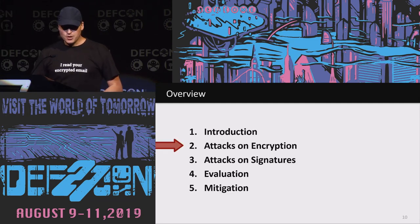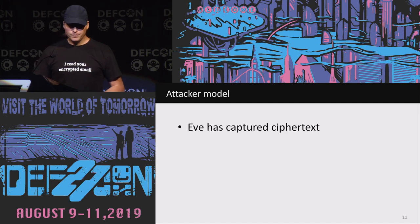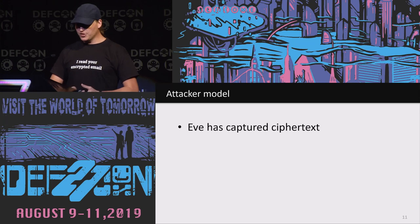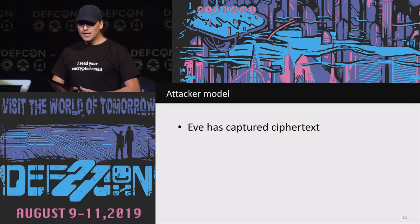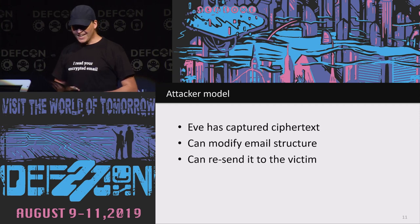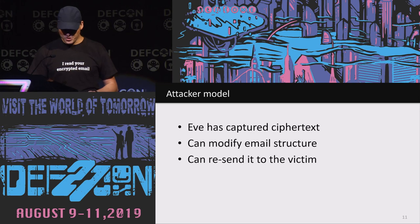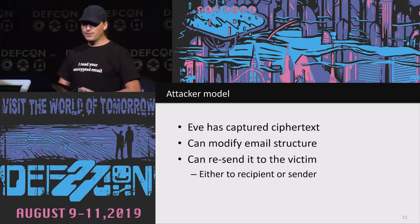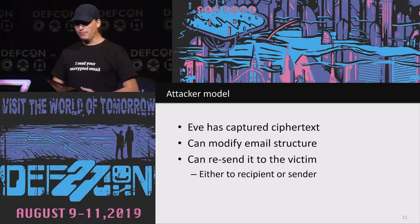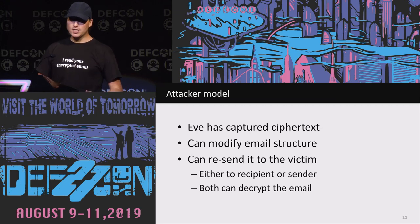Let me come to the attacks on encryption. Our attacker model is super simple: the eavesdropper Eve has somehow captured ciphertext between two communication parties. It's a strong attacker model, but the only reason you use end-to-end email encryption is that an insecure communication channel is presumed. What Eve can do with the captured ciphertext email is modify the outer MIME structure — no ciphertext modification or bit-flipping today. She can then resend that modified email to the victim, either the original sender or recipient, since emails are typically encrypted with the public key of both. Both can be misused as a decryption oracle.